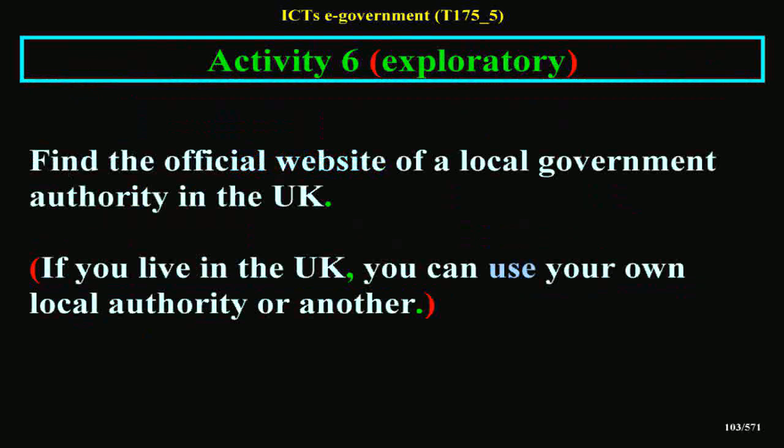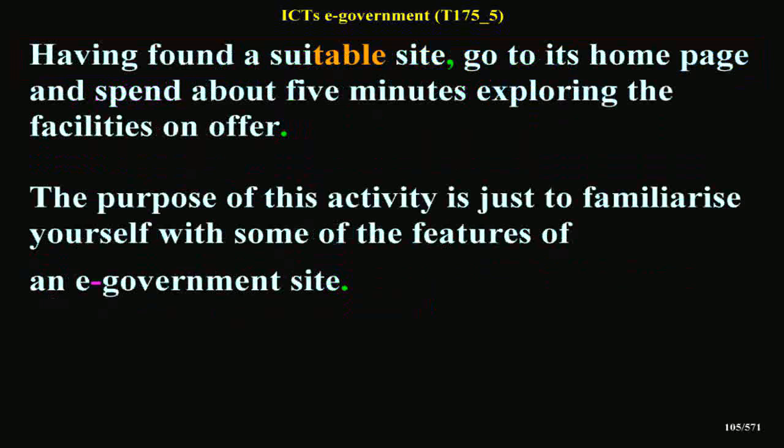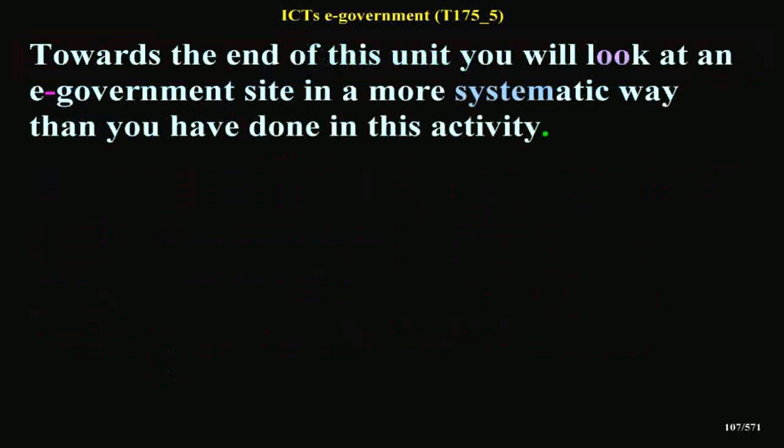Activity 6 Exploratory: Find the official website of a local government authority in the UK. If you live in the UK, you can use your own local authority or another. A simple way to find a suitable website is to use the search terms 'Council Tax' and the name of a town in a search engine. Having found a suitable site, go to its homepage and spend about five minutes exploring the facilities on offer. Discussion: different local authorities have different sites, so I cannot give an overall comment. You probably found that there was a certain amount of local authority information available, together with facilities for some transactions.